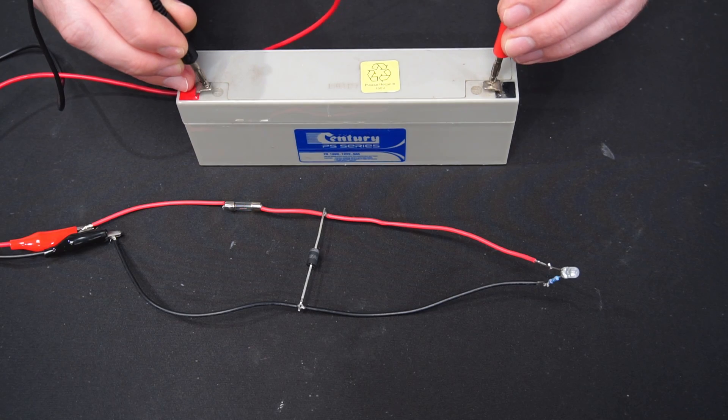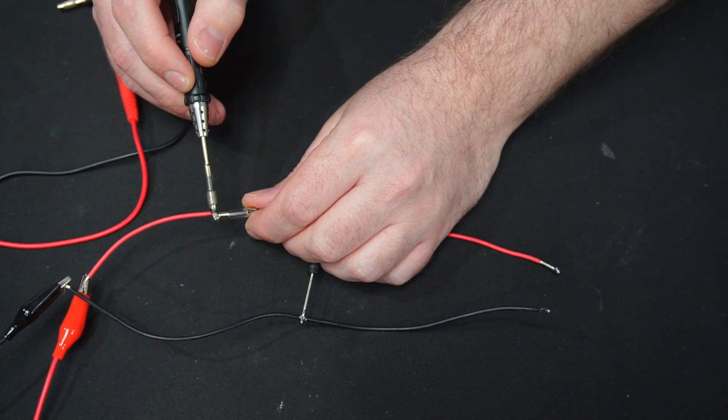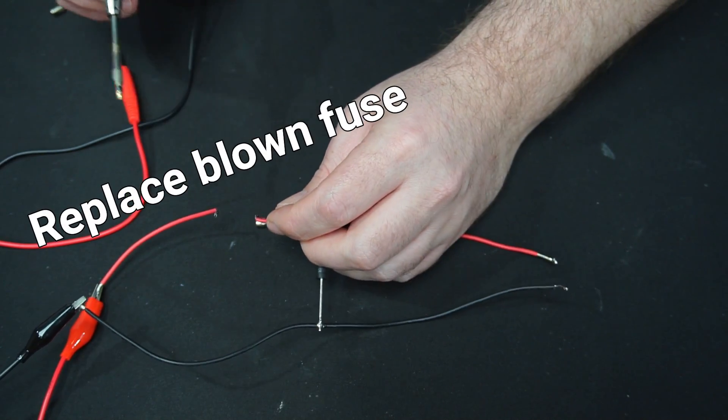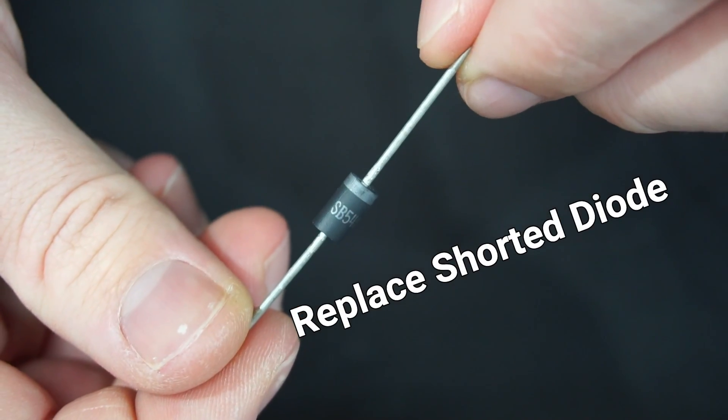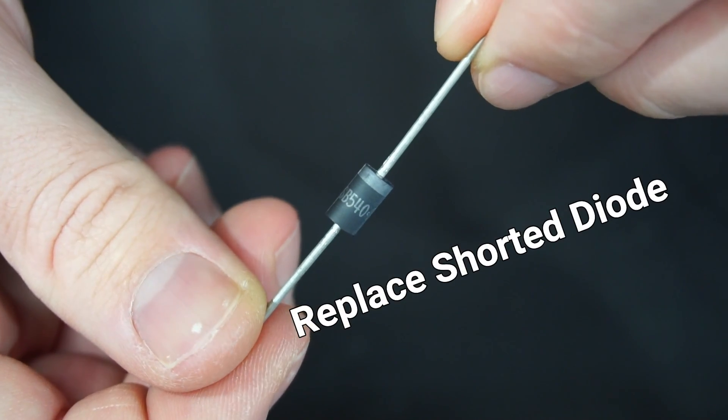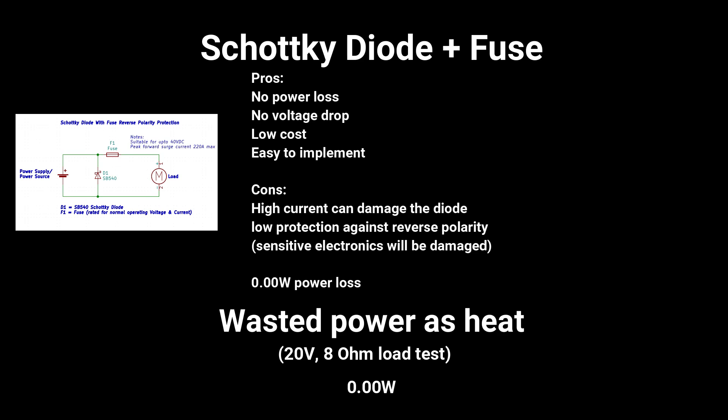And if enough current passes through the diode it can permanently short out the diode meaning both the fuse and diode need to be replaced. On the upside this protection is suitable for high current applications as there is no power loss and no wasted power being converted to heat. So the advantages of this method are no power loss, no voltage drop, low cost and easy to implement. However it comes at a cost. High current can damage the diode and it provides low protection against reverse polarity and sensitive electronics will be damaged.